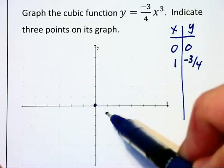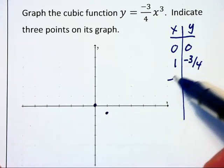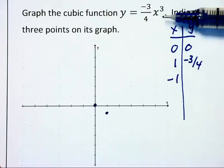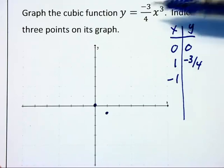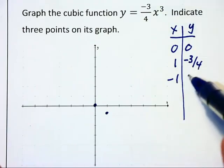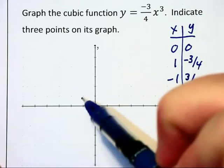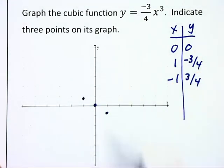And so we're going to have a point down there in the fourth quadrant. Negative 1. When we cube the negative 1 we get negative 1. Multiplied by negative 3 fourths gives us positive 3 fourths. And so we have another point right around there.